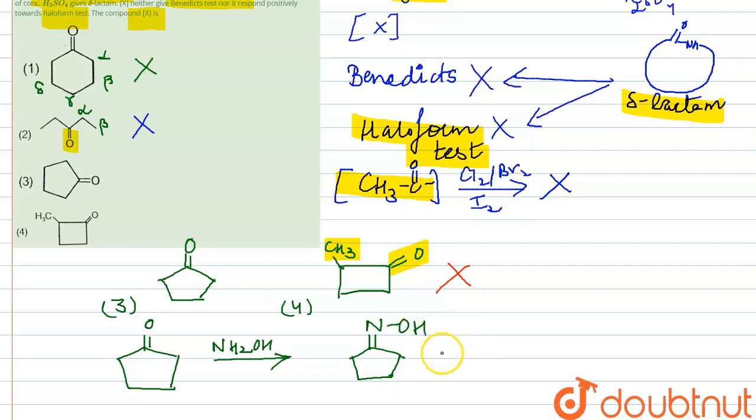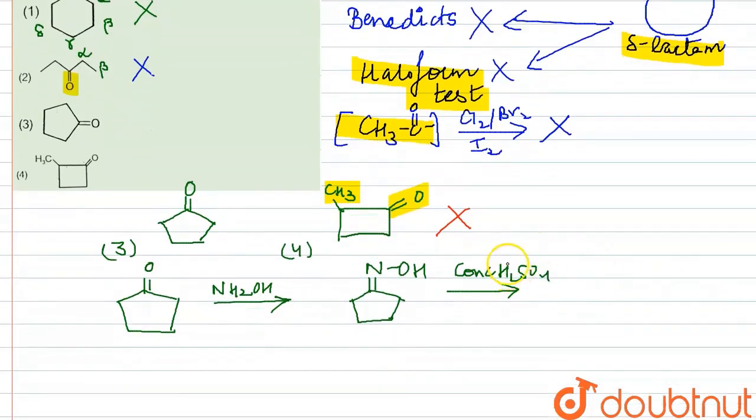This oxime will be formed here. After this, because of the reaction with concentrated H2SO4, it will form a lactam. What is lactam? A lactam has a CONH linkage, right? This is your delta lactam. This is alpha position, beta position, gamma position, and this is your delta position. So this is your delta lactam being formed here.